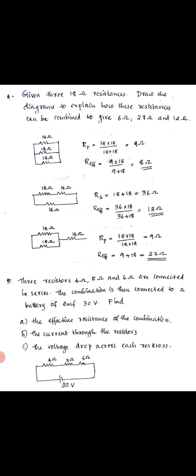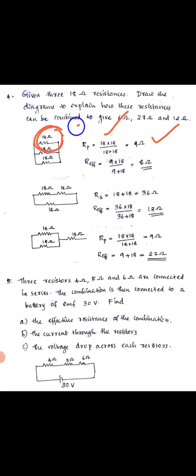The resistance is 18 ohm, 18 ohm, and 18 ohm — three resistances in parallel. For the first two parallel resistors: effective resistance = R1 into R2 divided by R1 plus R2 = 18 into 18 divided by 18 plus 18. The answer is 9 ohm. So the effective resistance of the first parallel pair is 9 ohm.